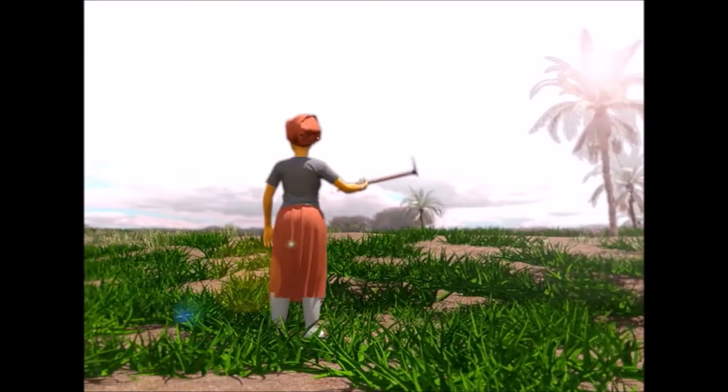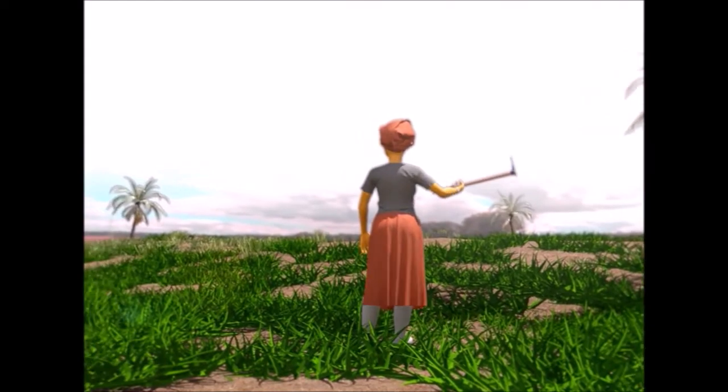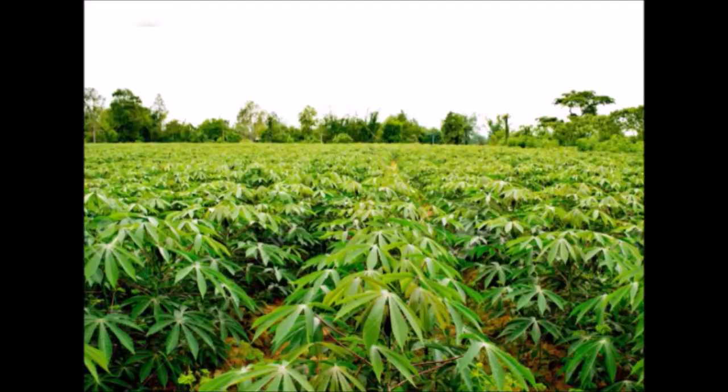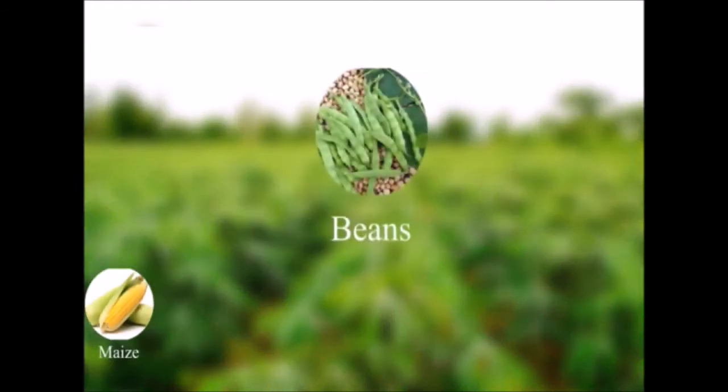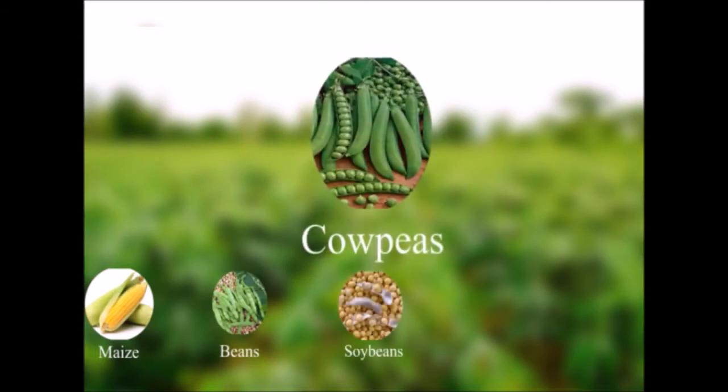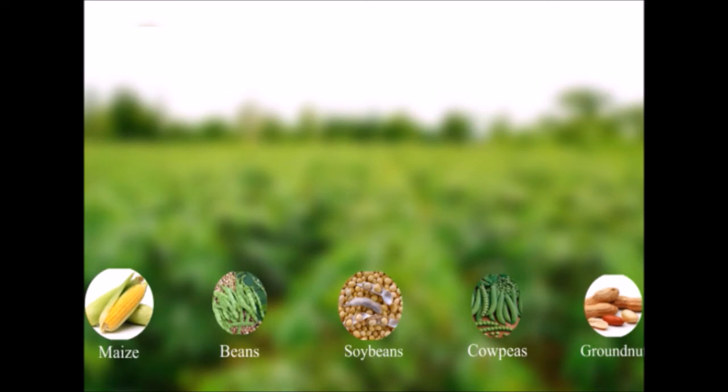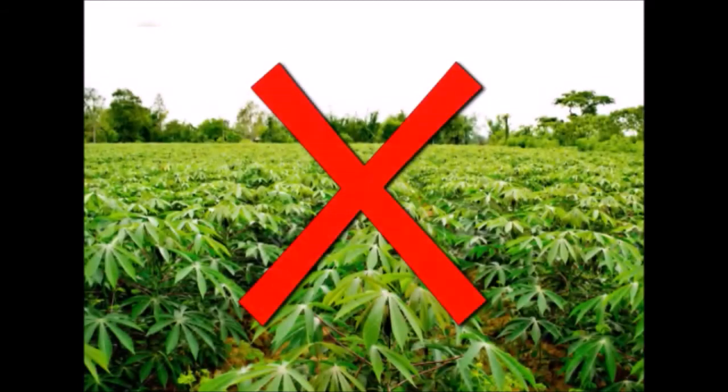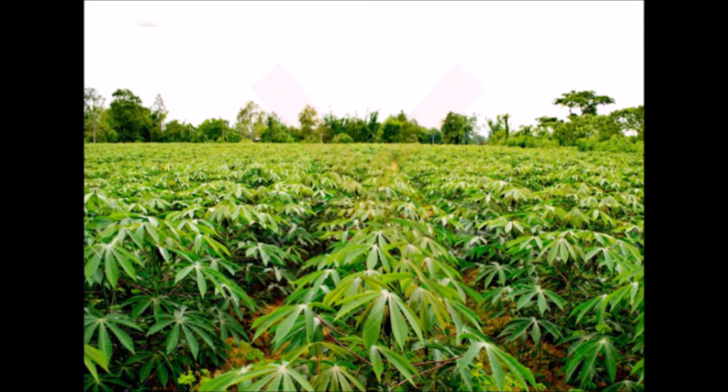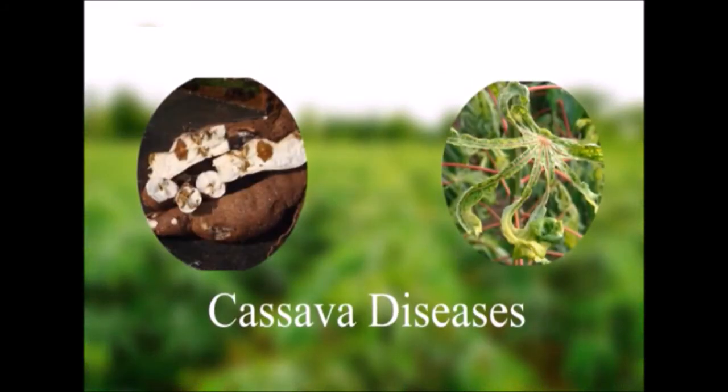We choose a sunny plot of land with well-drained loamy soil. We use fields where we grew maize, beans, soybeans, cowpeas or groundnuts the season before. These soils are fertile and will help my cassava grow well. We avoid using land on which cassava was grown in the previous season because cassava drains the soil. This also stops cassava diseases from spreading.